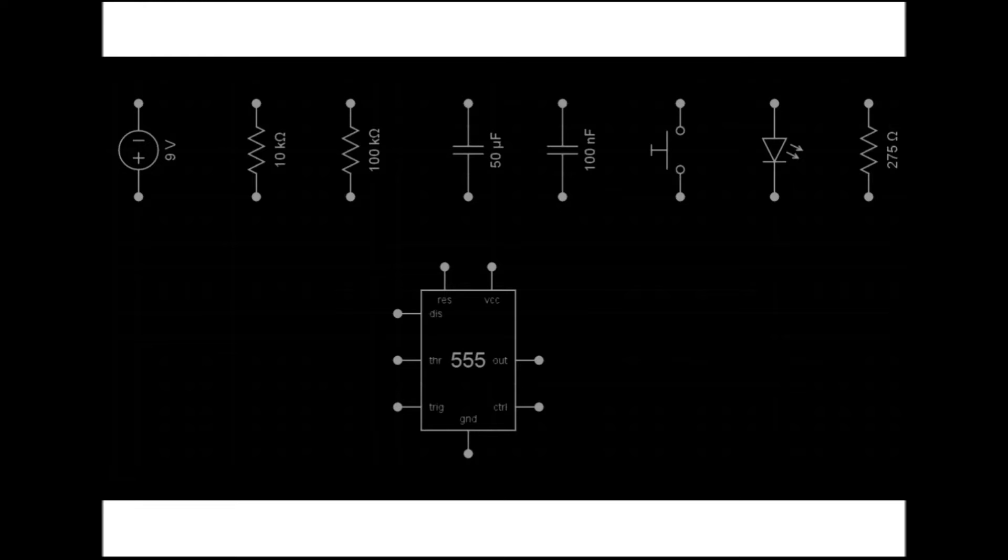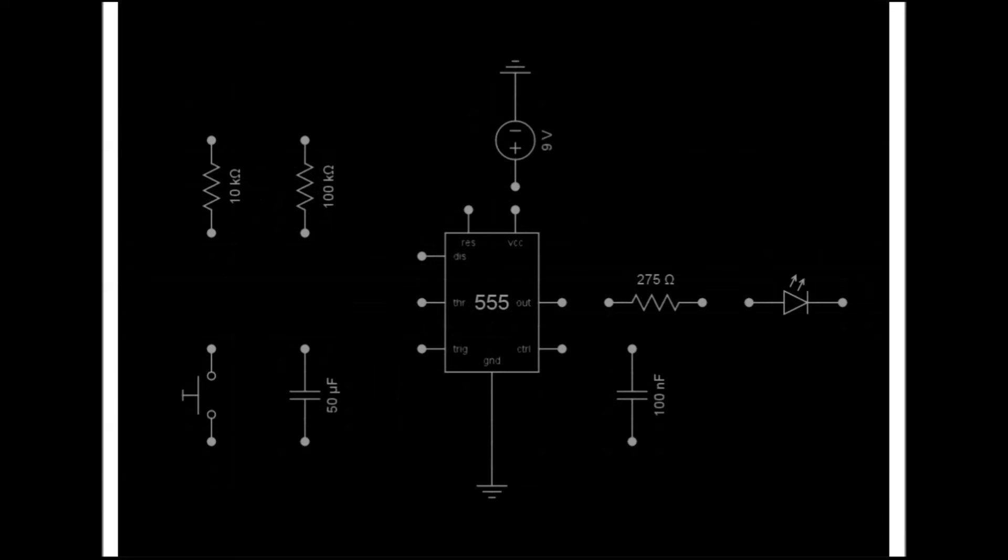The resistor R1 and capacitor C1 are important as they control the time that pin 3 will output a high signal. Before beginning the build, it is a good idea to lay the components out so the wiring will be minimal. We also need to add a ground point to the negative terminal of the power supply and to the ground pin.